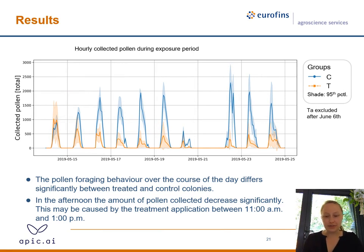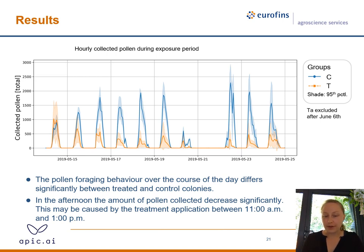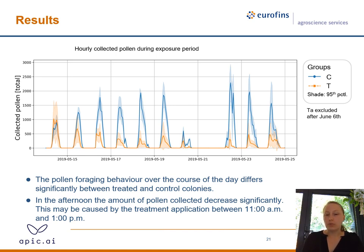Because we collected data continuously, we can look at how foraging behavior develops throughout the day. This graph shows hourly pollen collection during the entire exposure period. The treated group shows a lower overall pollen collection. Notably, it usually starts normally in the morning but then decreases. This may be because the treatment was applied between 11 a.m. and 1 p.m. each day.